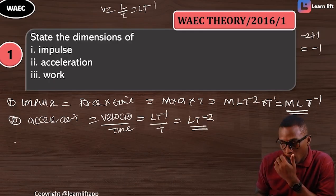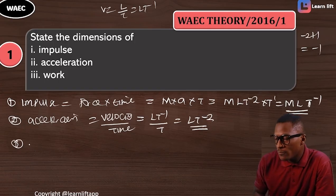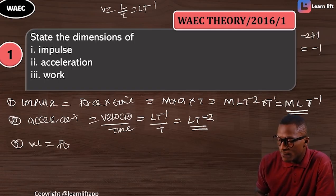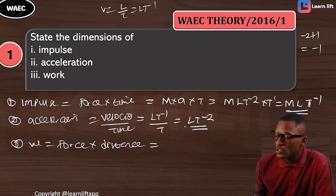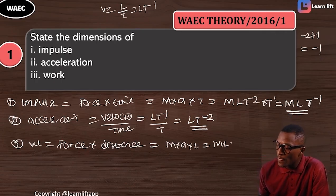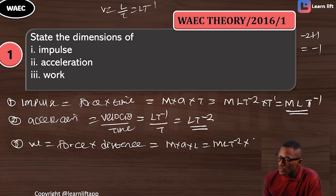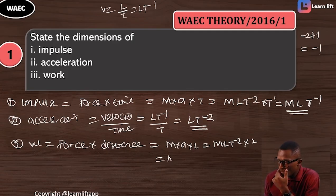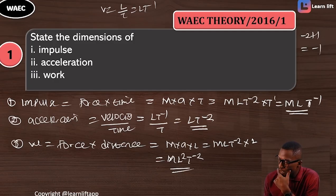Next is work. Work is equal to force times distance. Force is mass times acceleration, and distance is L. So that gives M × LT⁻² × L, which equals ML²T⁻². That is the dimension for work. Very simple.